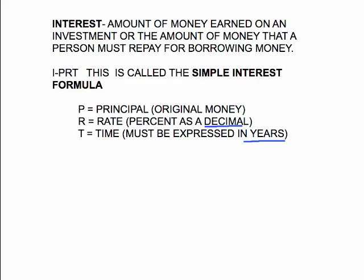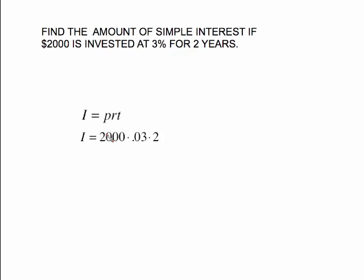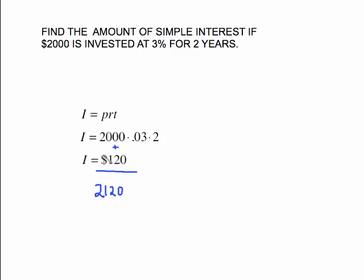Find the amount of simple interest if two thousand dollars is invested at three percent for two years. Here's your P, your R, and your T — T is already in years, so we don't have to do anything special. The only thing we do is change three percent to a decimal: 0.03. So it's two thousand times 0.03 times two. Type it in the calculator and you get one hundred and twenty dollars of interest. If asked for the total amount, take two thousand plus one hundred and twenty to get two thousand one hundred and twenty dollars in the account at the end of two years.